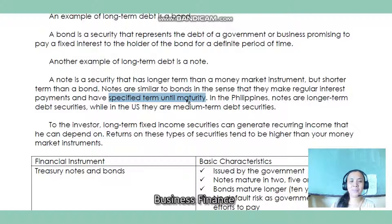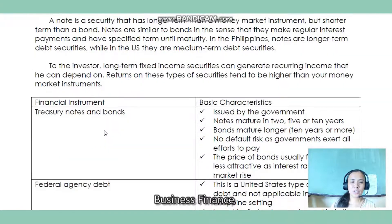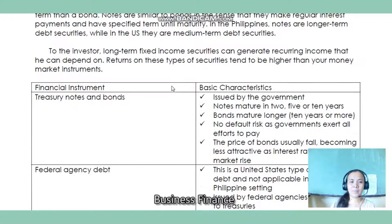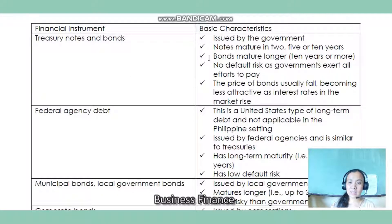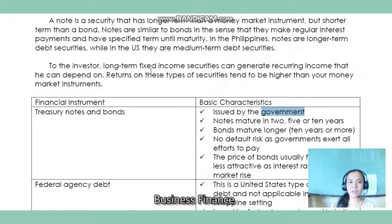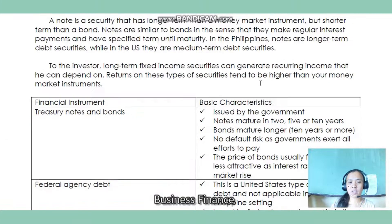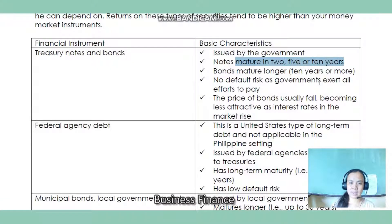Long-term fixed income securities can generate recurring income and tend to have higher returns than money market instruments. Examples of long-term debts include treasury notes and treasury bonds. When you say treasury, it is issued by the government. Compared to treasury bills — which mature within one year — treasury notes and treasury bonds mature in two, five, or ten years, with bonds maturing longer than notes.